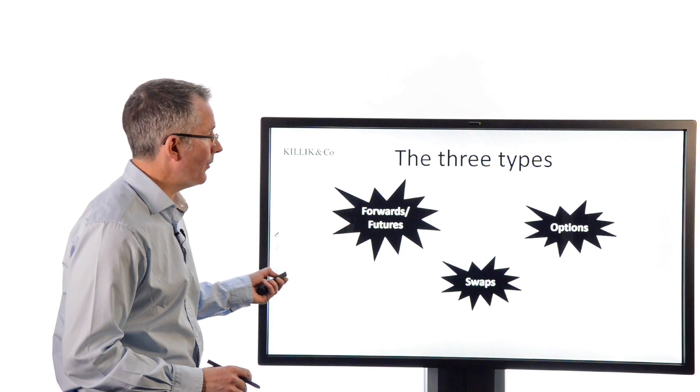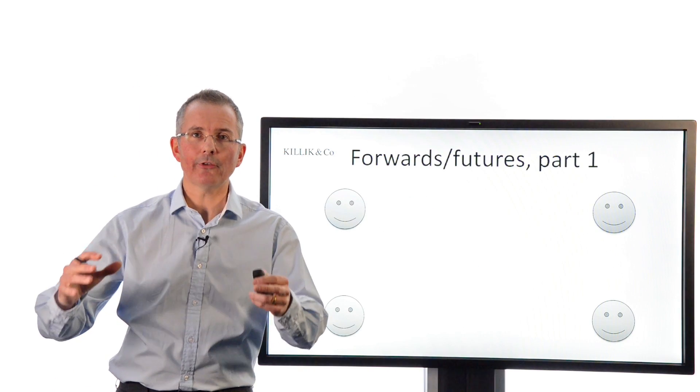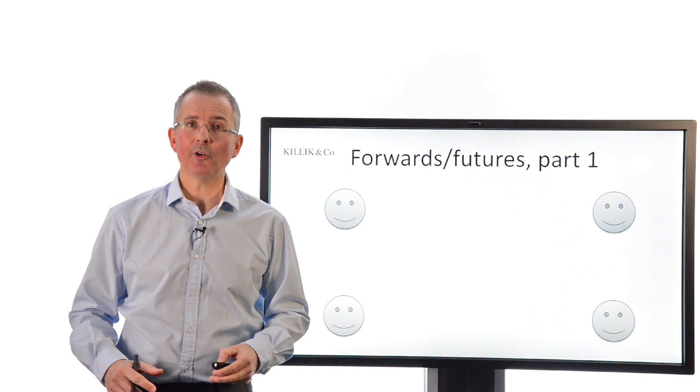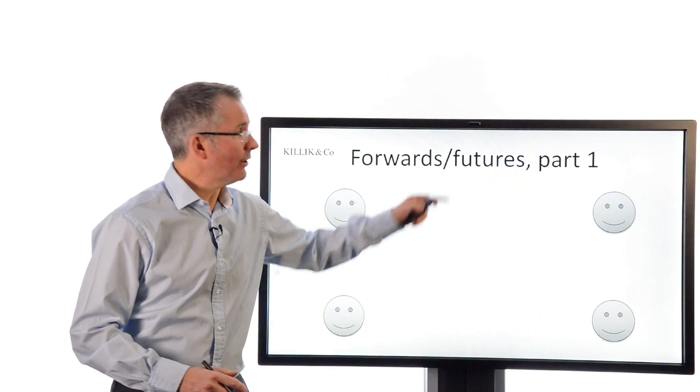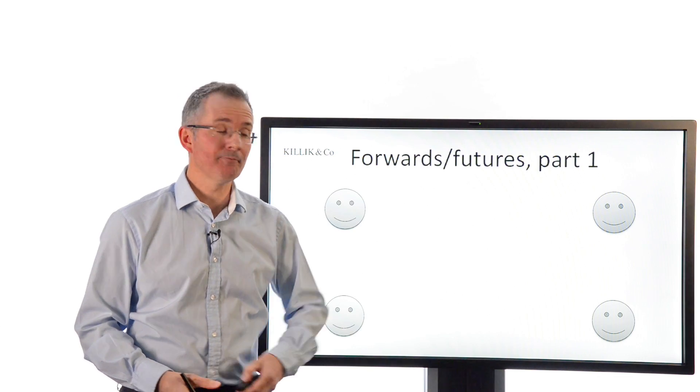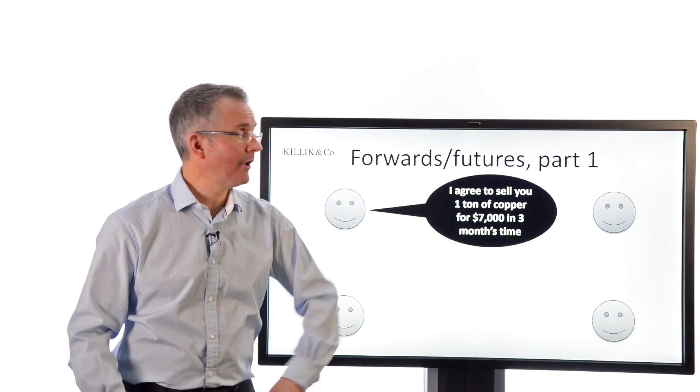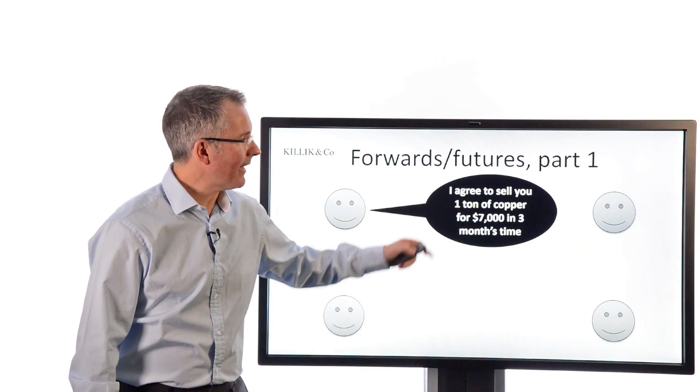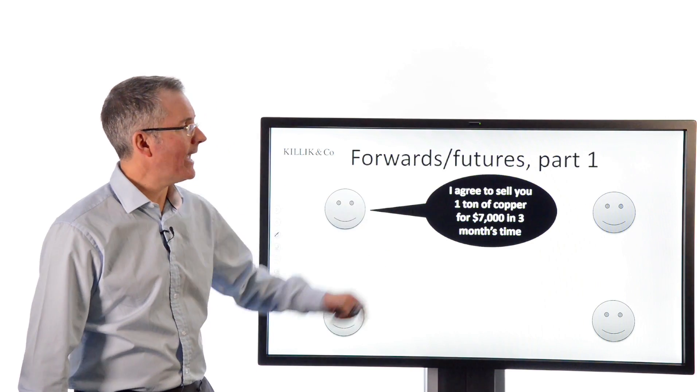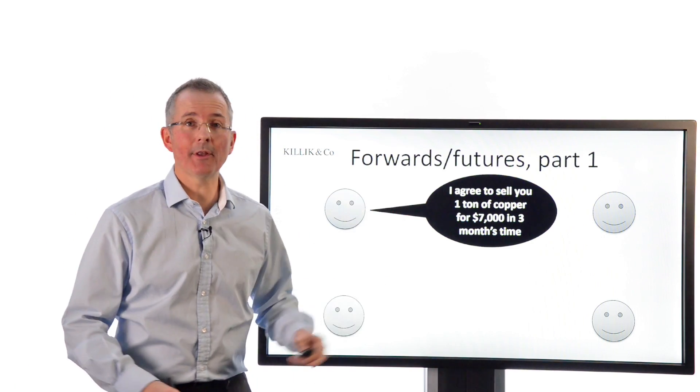Forwards and futures part one. This is the oldest and most straightforward use of a forward contract. Futures are just the exchange tradable version of forwards. Here's a basic contract, and these go back centuries. I agree to sell you one tonne of copper for $7,000 in three months' time. Why? If I'm a copper producer, that hedges the price. I now know what I will get for copper in three months' time.